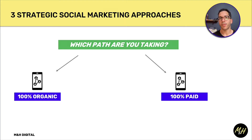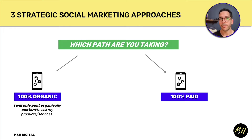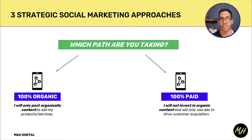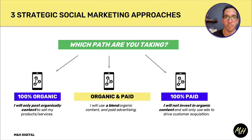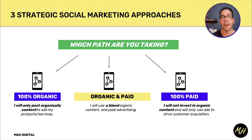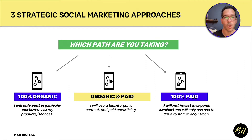There are three fundamental approaches you can use for social marketing. First is 100% organic — posting content on Facebook, Instagram, or whatever channel. Second is purely paid advertising. My recommendation is that any complete social media strategy needs a blend of tactics that are organic, content-focused, and paid to amplify and reach audiences beyond your existing followers. For this video we're going to focus on the organic side.